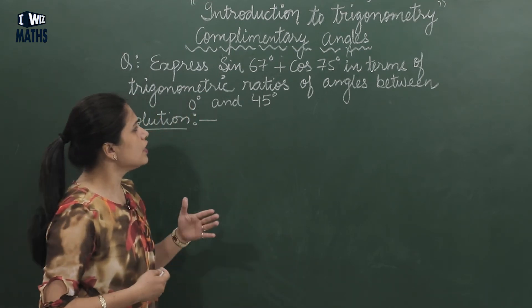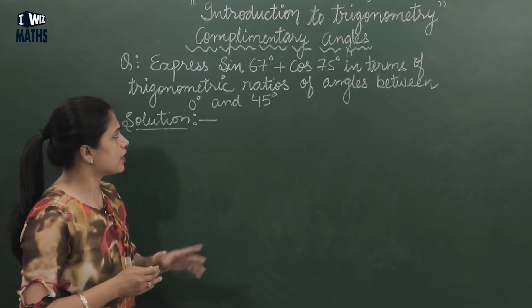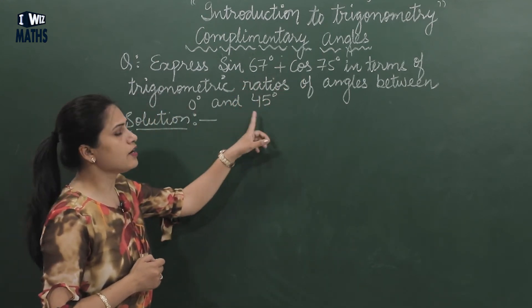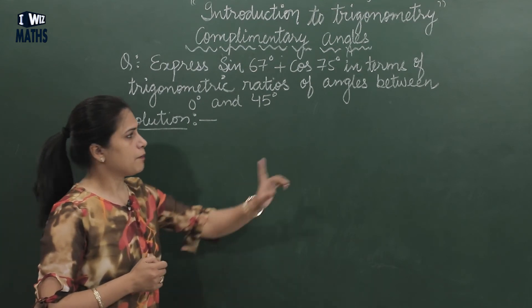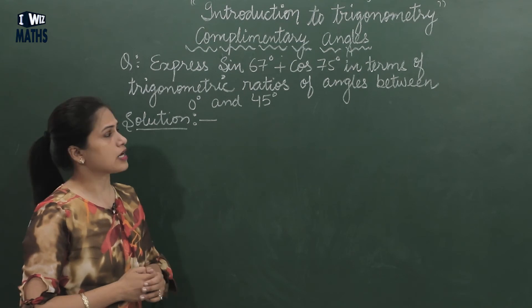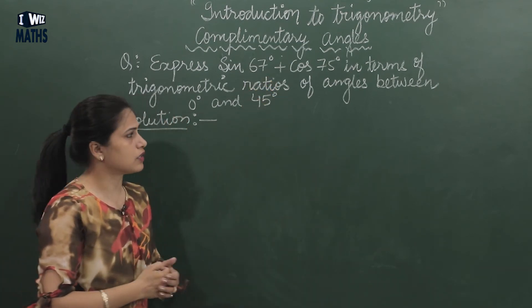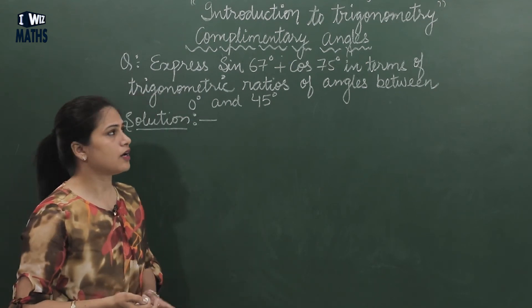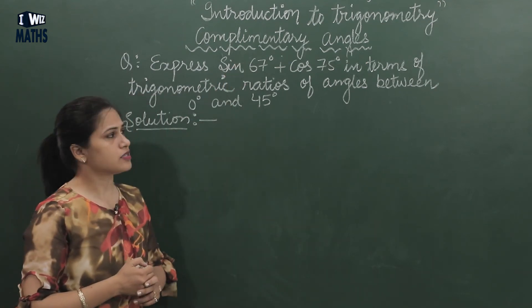What does this mean? This means that here there's an expression, and we need to rewrite this expression. And it's not necessary that these trigonometric functions remain the same - there can be other ratios as well. But the angle that remains should not be these angles, it should be angles between 0° and 45°. 'Between' is written, meaning in between.